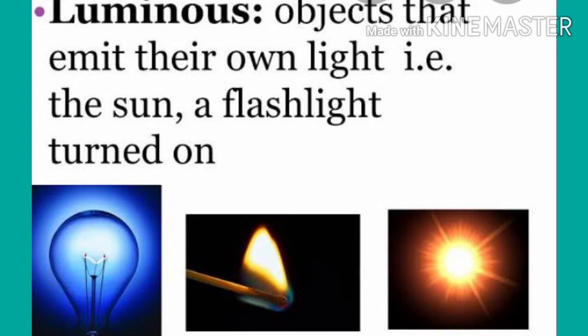When you switch on the tube light, the light falls on the chair, table, and wall — they all shine. But that does not mean they have their own light. They reflect the light of the tube light. The wall reflects the tube light, but it does not have its own light. The objects which have their own light or which emit their own light are called luminous objects.